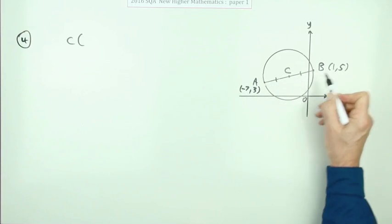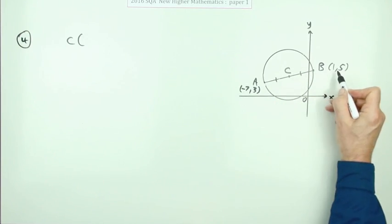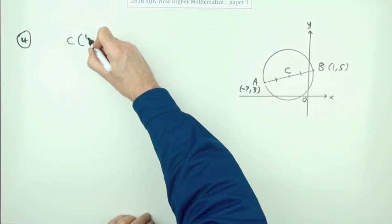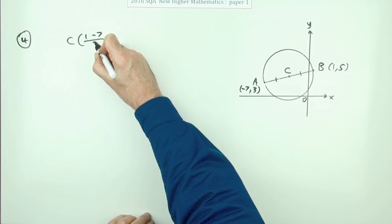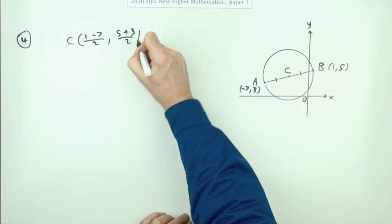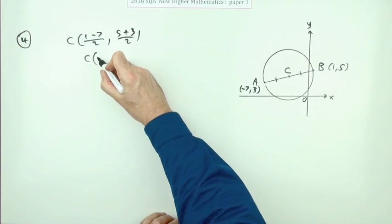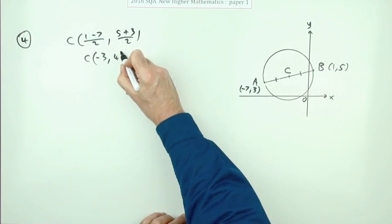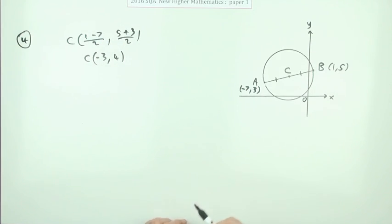You'll get the halfway if you take the average of the numbers. So you've got one and negative seven, half of that. And you've got five and three. So the centre is going to be the point negative six upon two, which is negative three, and eight upon two, which is four. That's the first mark. And you would have got it just for stating that.